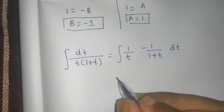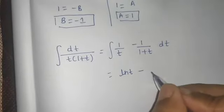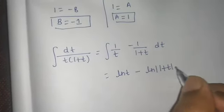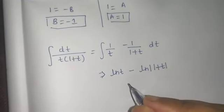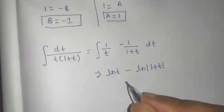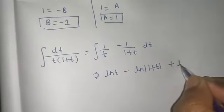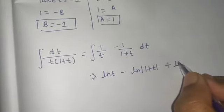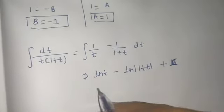The integral of 1/t is ln t. The integration of 1/(1+t) is also ln(1+t). This is how we have done this, plus a constant C.